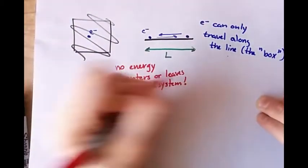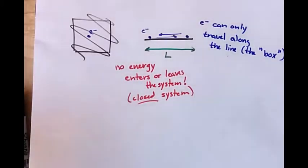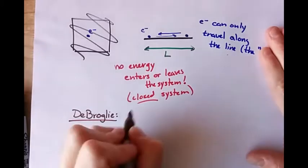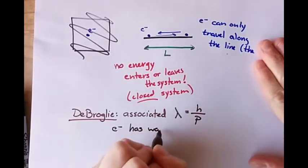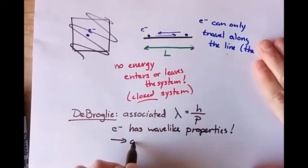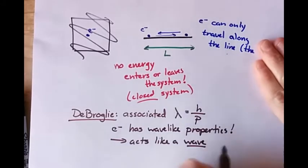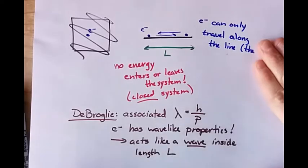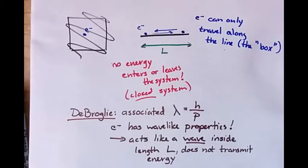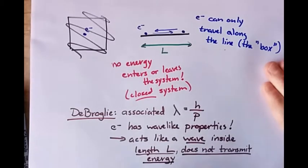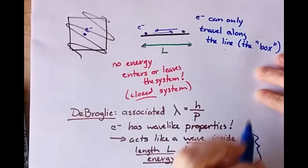Now remember, electrons have an associated wavelength. That's the de Broglie hypothesis — the de Broglie hypothesis says that all matter has an associated wavelength. But the electron does as well, even if it's trapped in a box. So we can think of the electron as acting like a wave inside of a length L, and it cannot lose or gain energy. A wave stuck within a length L that does not transmit energy — that sounds a lot like a standing wave.